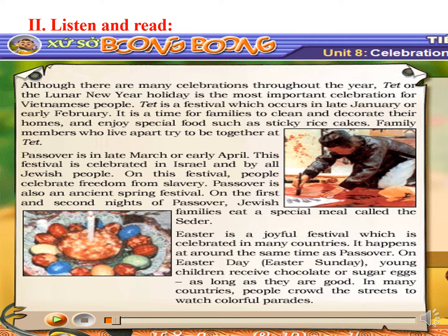Family members who live apart try to be together at Tet. Passover is in late March or early April. This festival is celebrated in Israel and by all Jewish people. On this festival, people celebrate freedom from slavery. Passover is also an ancient spring festival. On the first and second nights of Passover, Jewish families eat a special meal called the Seder.